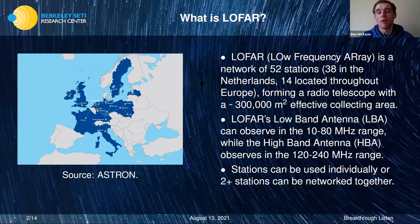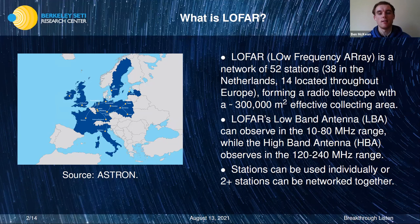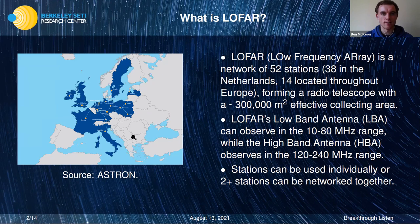LOFAR — the Low Frequency Array — is a network of 52 stations, 8 in the Netherlands and 14 more throughout Europe, forming a radio telescope with an approximate collecting area of about 300,000 square meters. LOFAR stations have two antenna types: the low band antenna observing in the 10–80 MHz range, and the high band antenna observing in the 120–240 MHz range. Stations can be used individually in local mode or networked together for a greater collecting area.